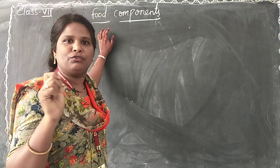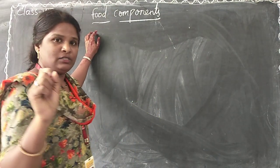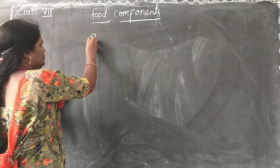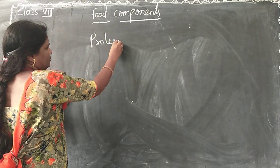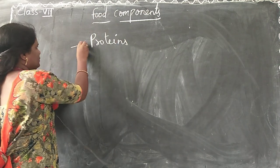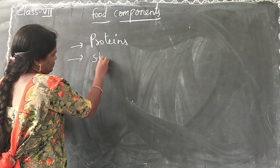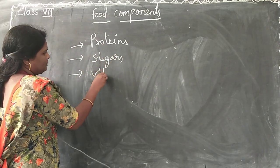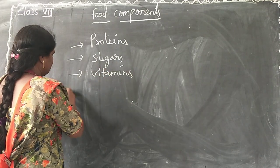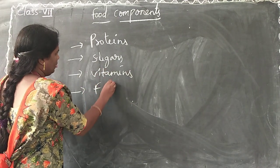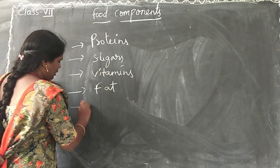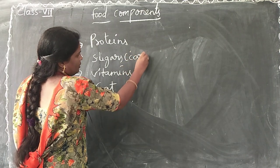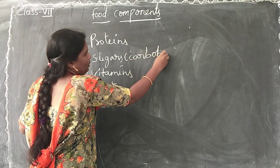Why do we require these food components? I will explain you about the food components: proteins, starch, sugar, vitamins, fats, and carbohydrates. Sugars are nothing but carbohydrates.